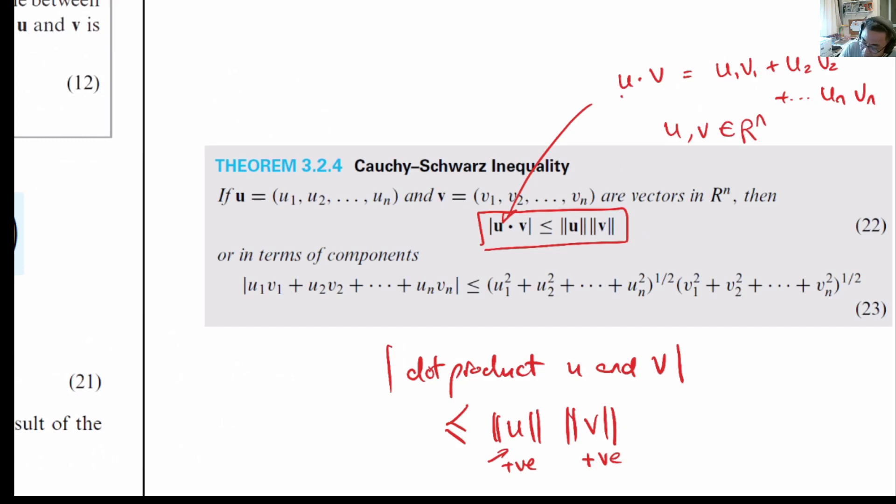Note that u dot v can be positive or negative values or even zero depending on how u and v are related in terms of their angle.